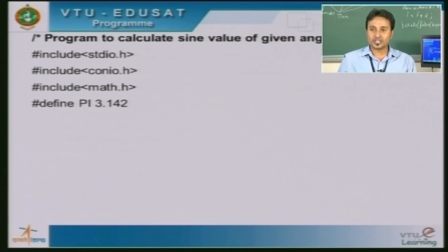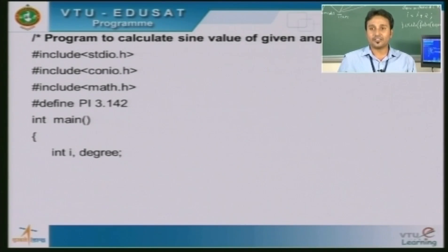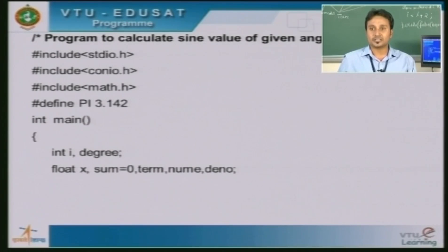Here #define, once again a preprocessor directive, along with PI 3.142, defines PI as a symbolic constant with the value 3.142, which remains the same throughout our program. Next we have the main function from where program execution starts. Inside the main function we have the declaration part — we declare variables i and degree as integer data type, followed by x, sum (initialized to 0), term, numerator, and denominator, which are declared as floating data types.